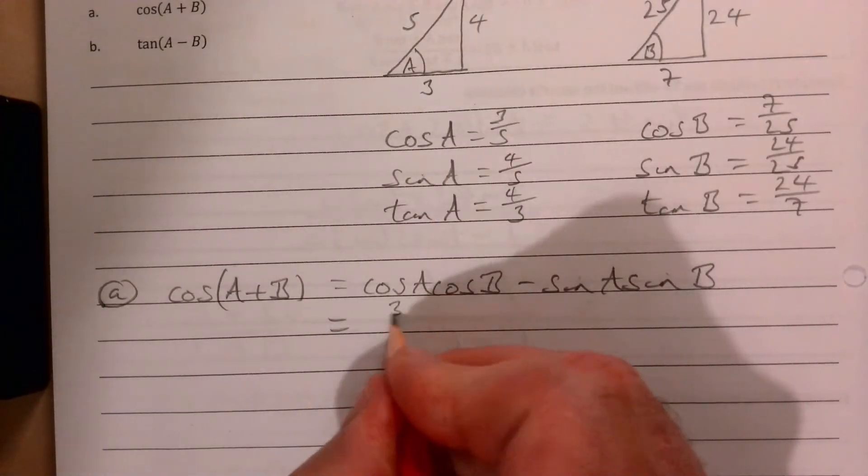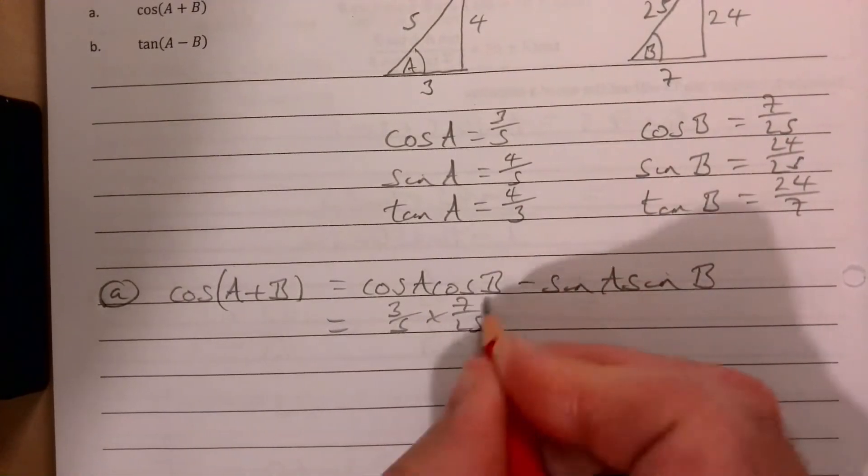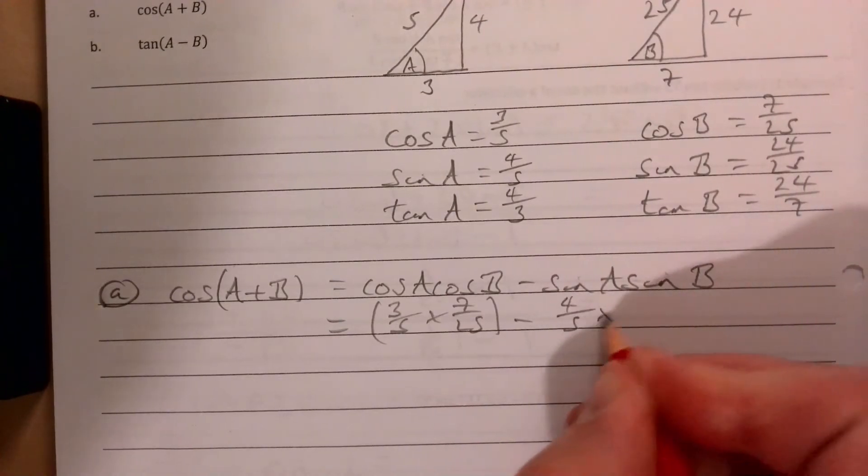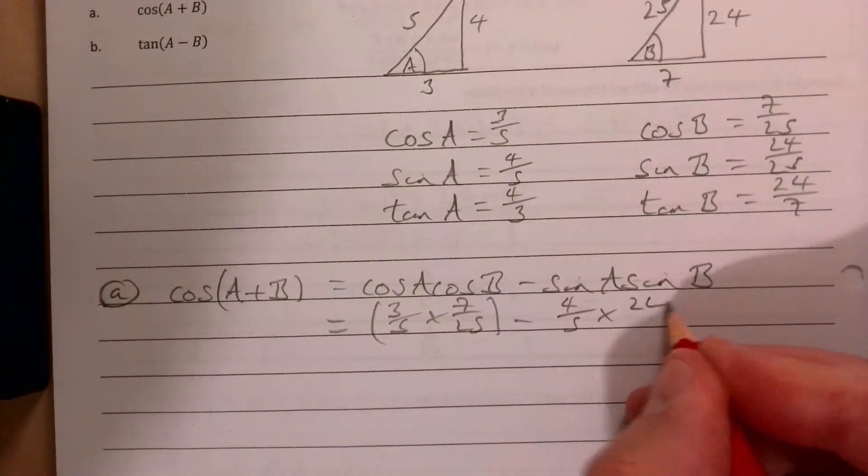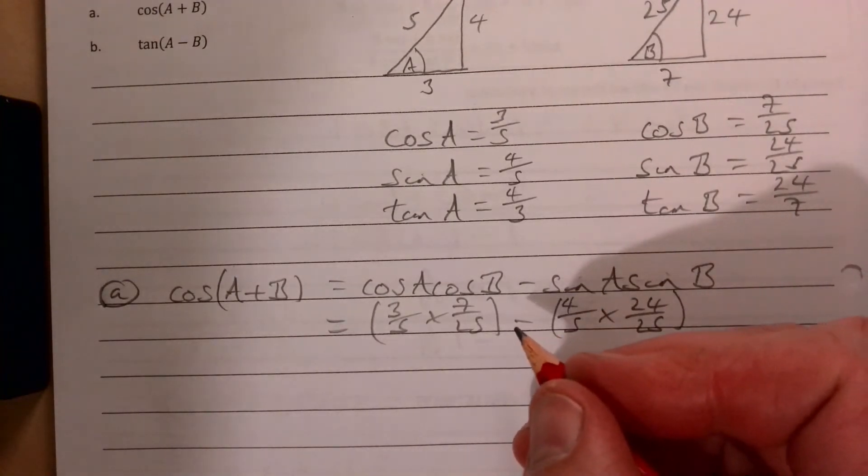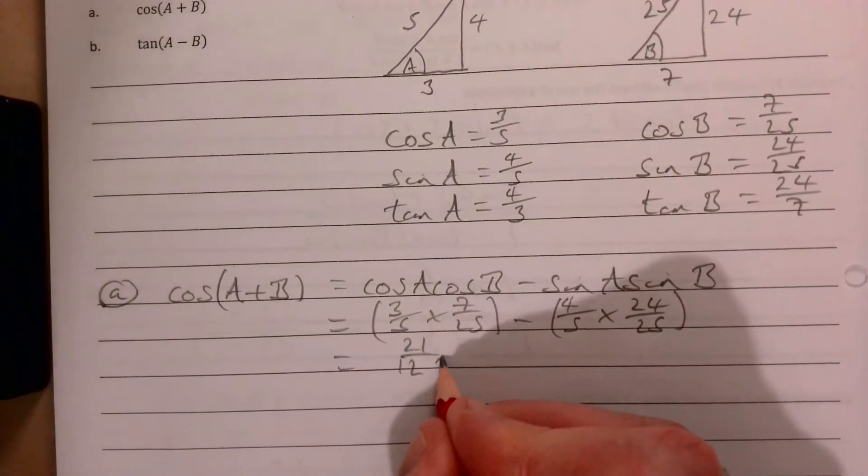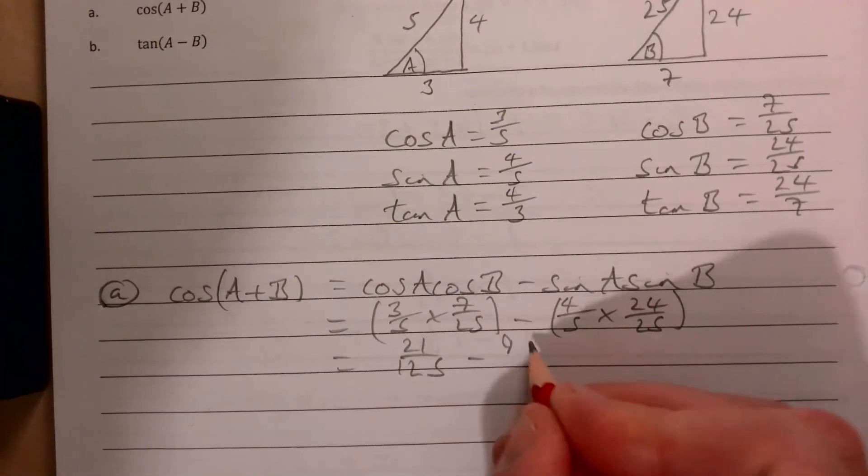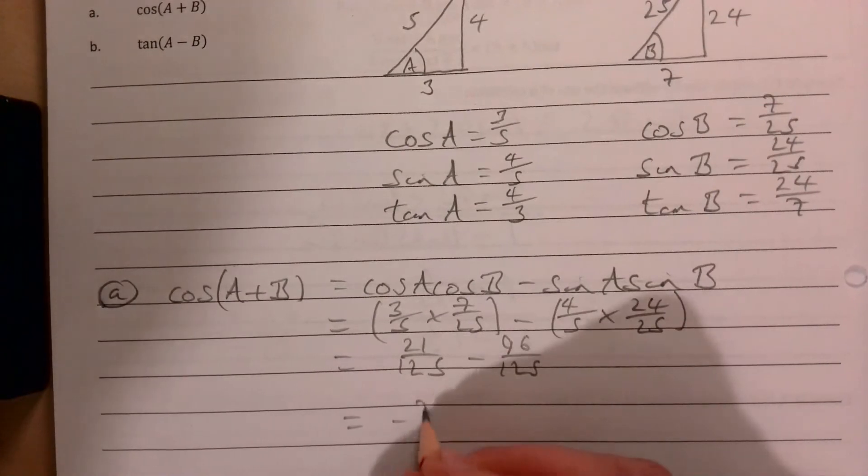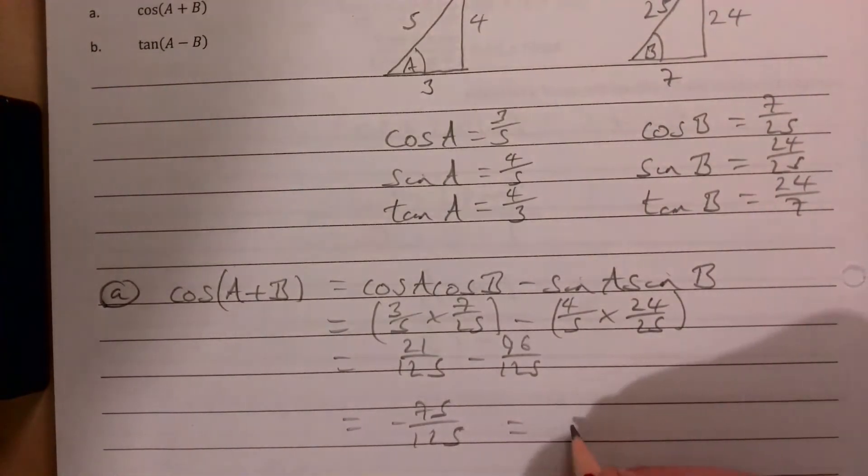Take away 4/5 multiplied by 24/25. That's 21/125 take away 96/125.